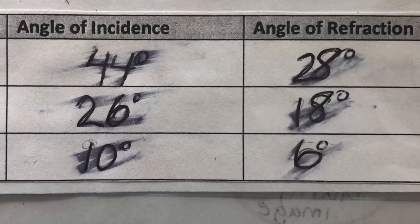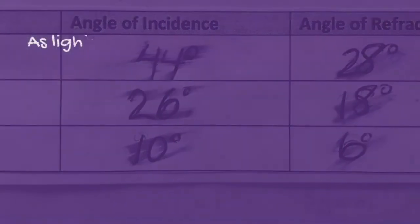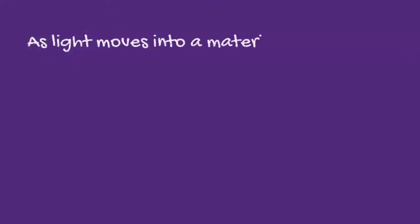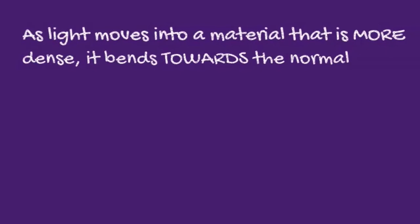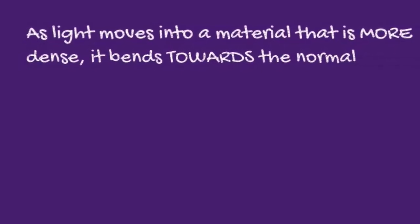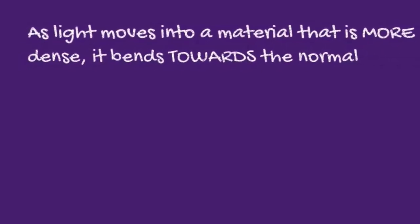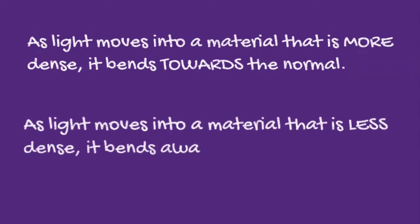Based on the data collected, what you should notice is that as light moves into a material that is more dense, it bends towards the normal as it slows down. This makes the angle of refraction smaller than the angle of incidence. Conversely, as light moves into a material that is less dense, it bends away from the normal as it speeds up.